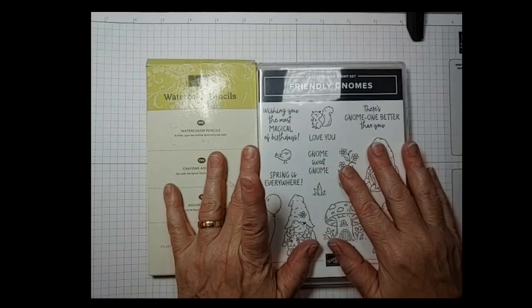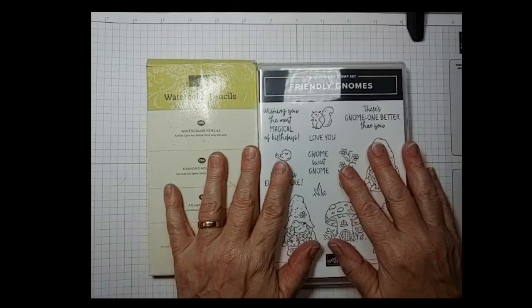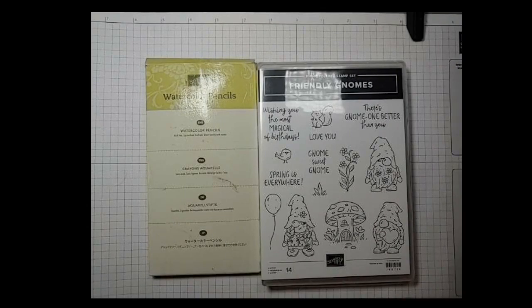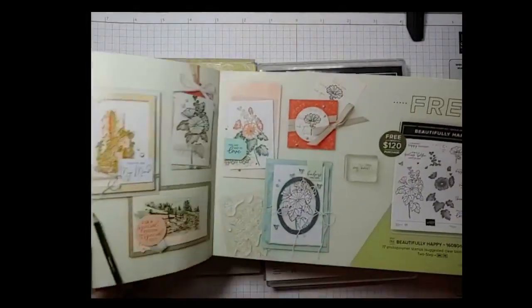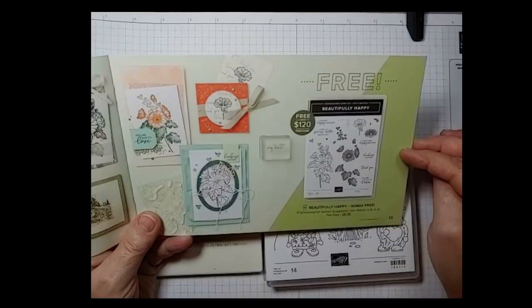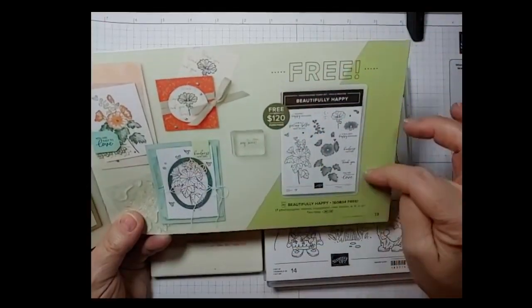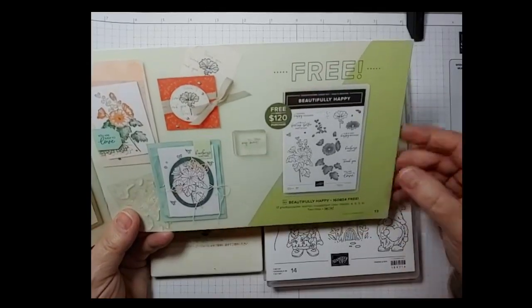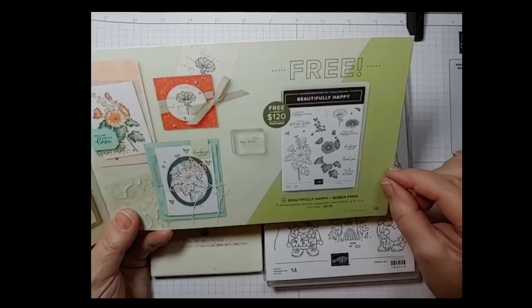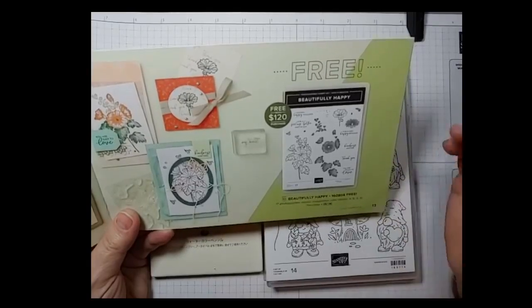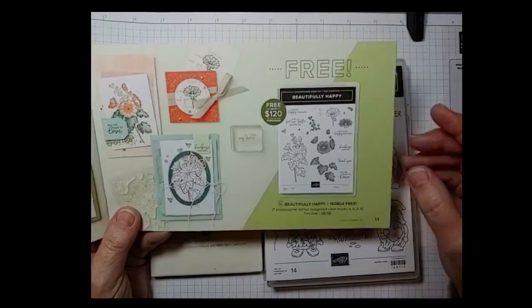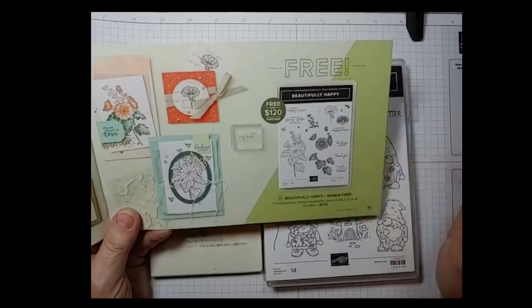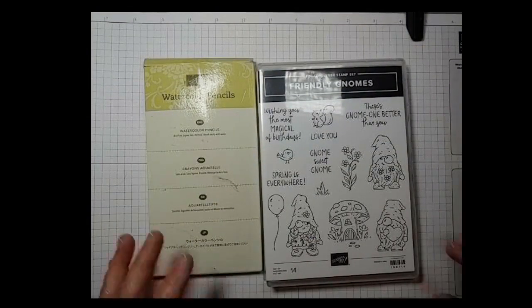I have coming up also a class using the Beautifully Happy Stamp Set. That stamp set is a free sale-abration item on While Supplies Last at a $120 purchase level. You can either have your own stamp set and pay a certain fee, or I will provide a stamp set and the fee would be higher. The host code is listed in the description of the video.